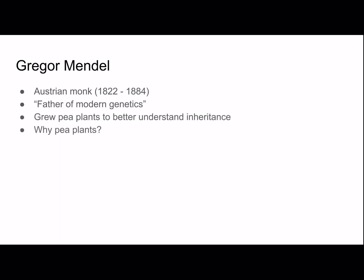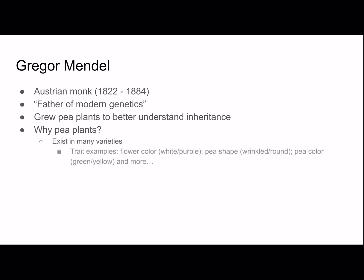Why pea plants? Why was that such a good choice? Well, they exist in many varieties. Trait examples include flower color, which could be white or purple, pea shape — wrinkled or round — pea color — green or yellow — and more, and we'll be talking about them throughout the video.